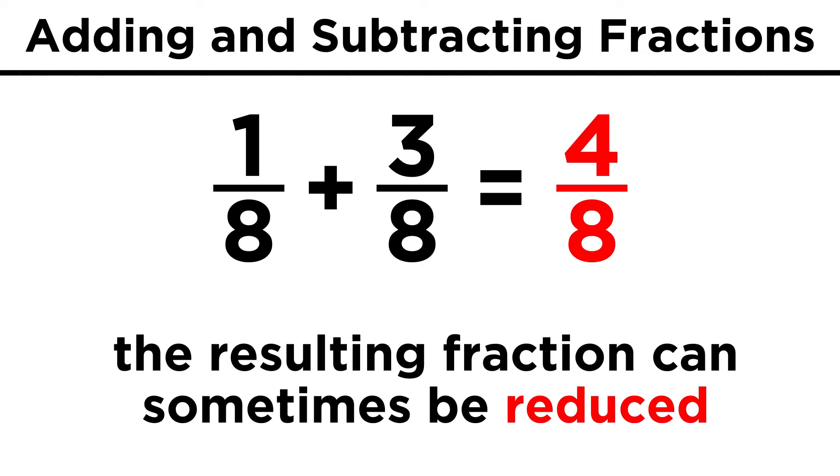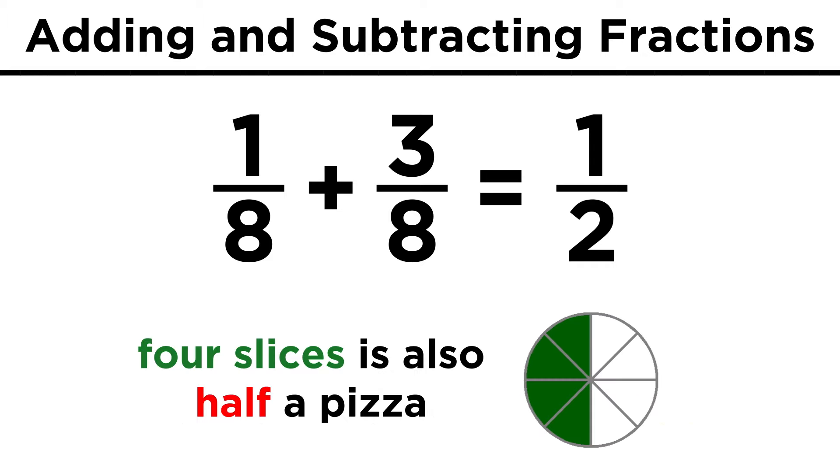Once we have the sum, we can reduce if applicable. Four eighths reduces to one half, which makes sense as four slices is half a pizza, so that will be our final answer.